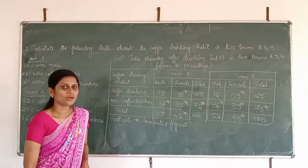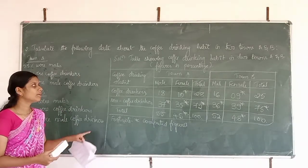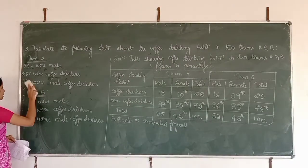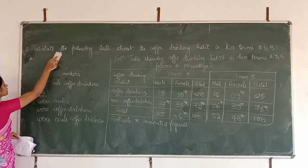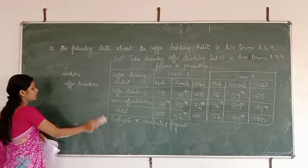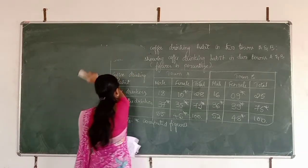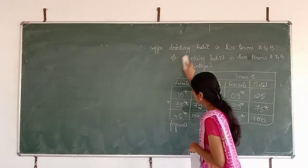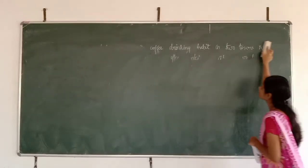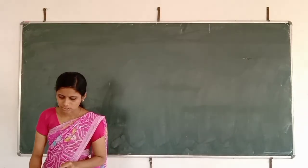I hope you have understood how to draw the table. First, write the title; next, draw a blank table; then fill the table with the given information; then calculate the missing cells and show that calculation in a footnote, then fill the table.